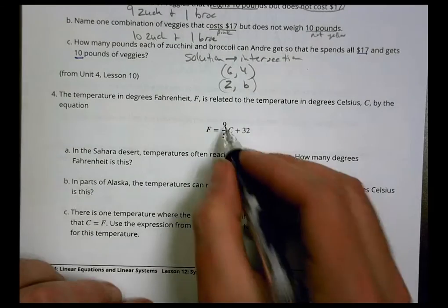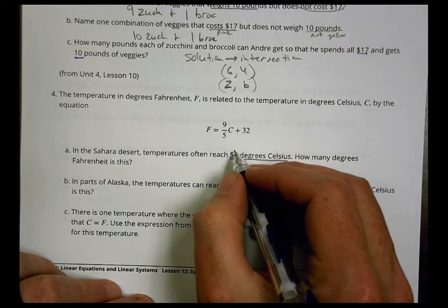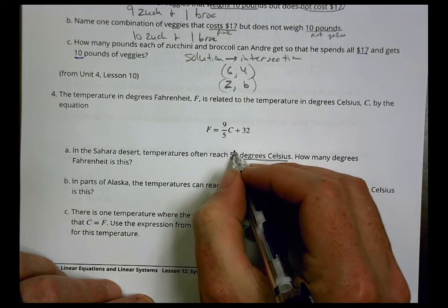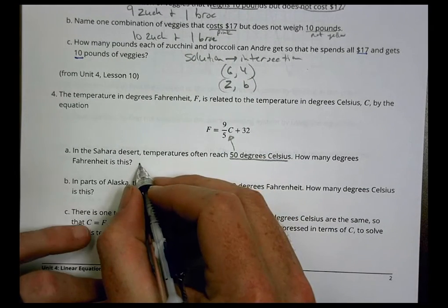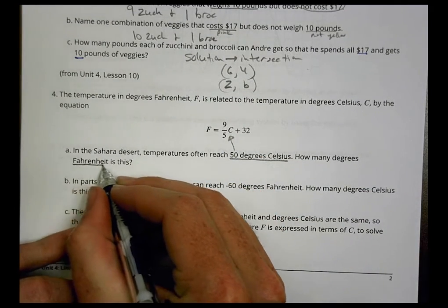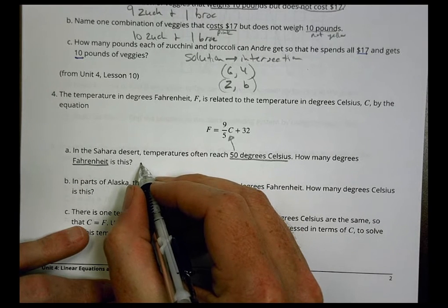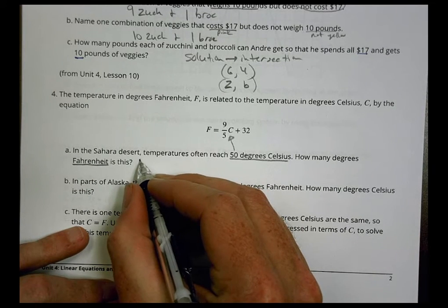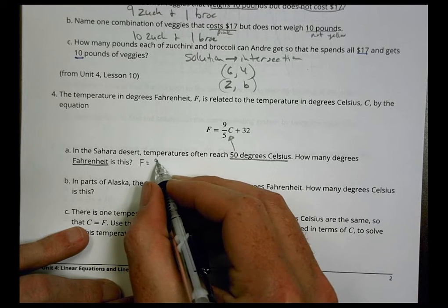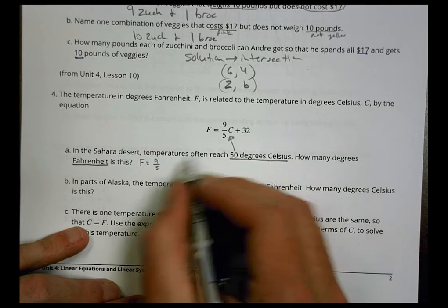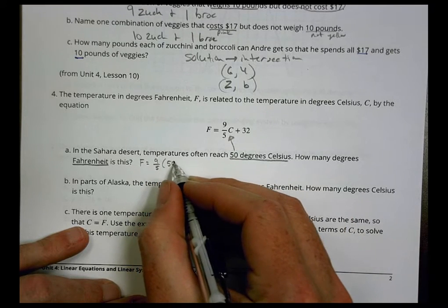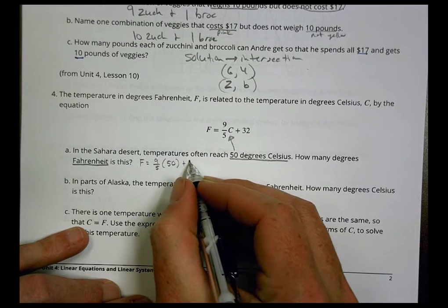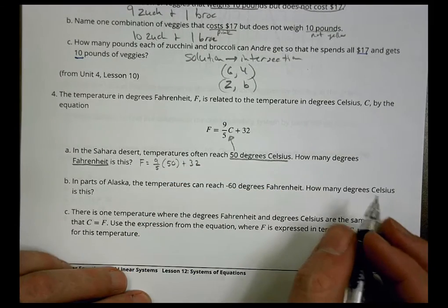We're going to use that equation and plug these things in. In this case, we have a degree Celsius which is going to go right there where the C is at. Now we're solving for Fahrenheit. So the equation would look like: F equals 9/5 times Celsius, which is 50, plus 32.